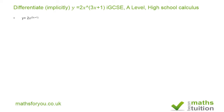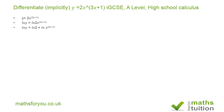If we then take natural logs of both sides, we end up with the natural log of y is equal to the natural log of 2x raised to the power 3x plus 1. If we then break up the right hand side using a law of logarithms, we have that the natural log of y is equal to the natural log of 2 plus the natural log of x raised to the power 3x plus 1.